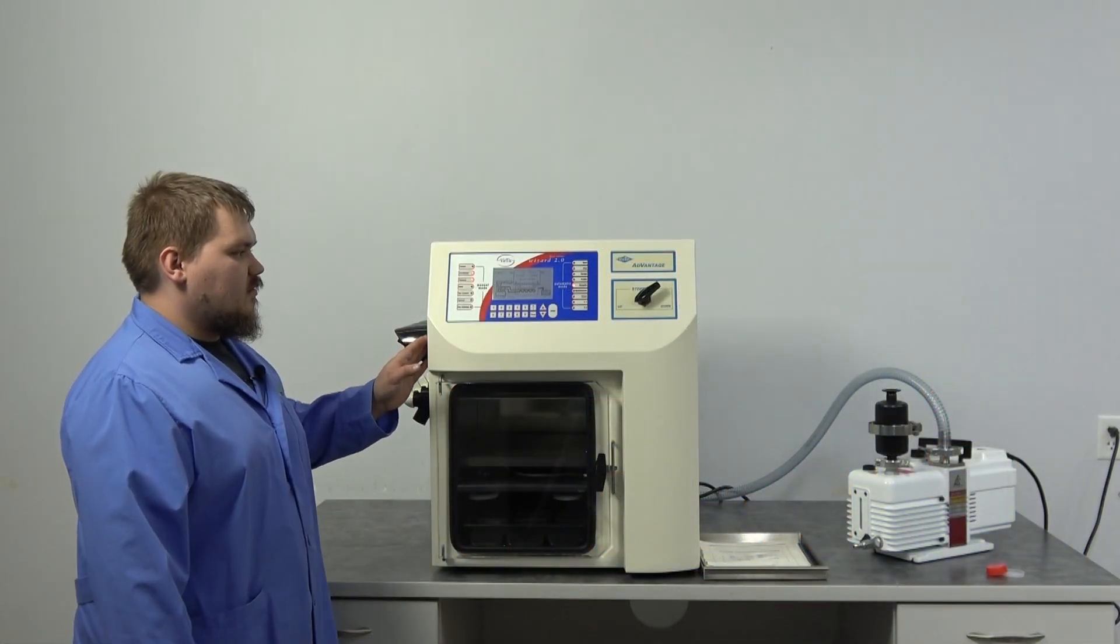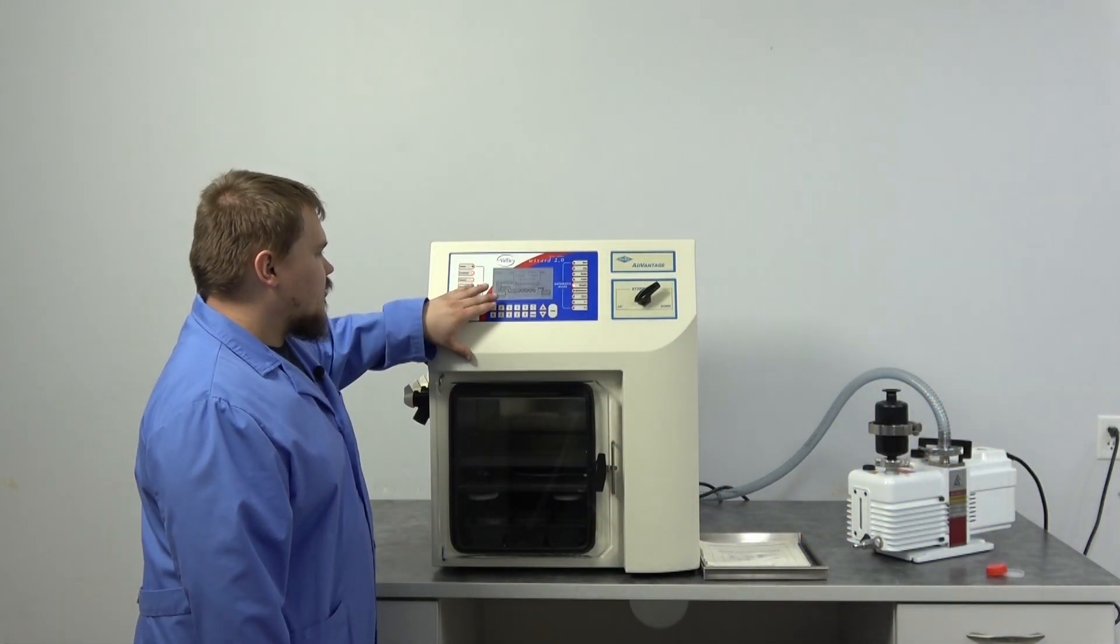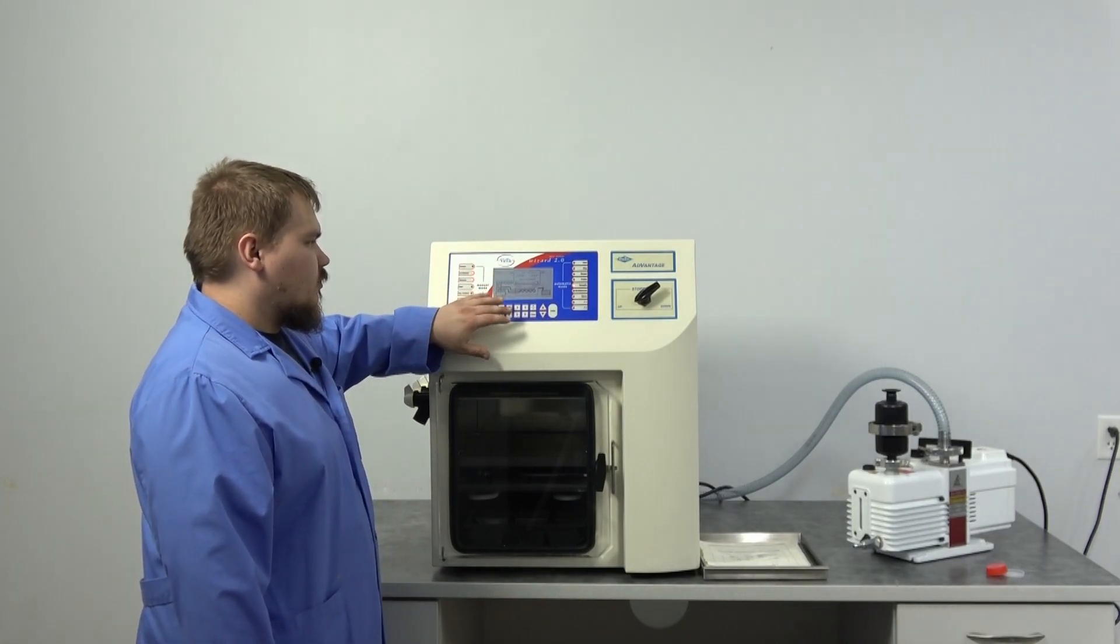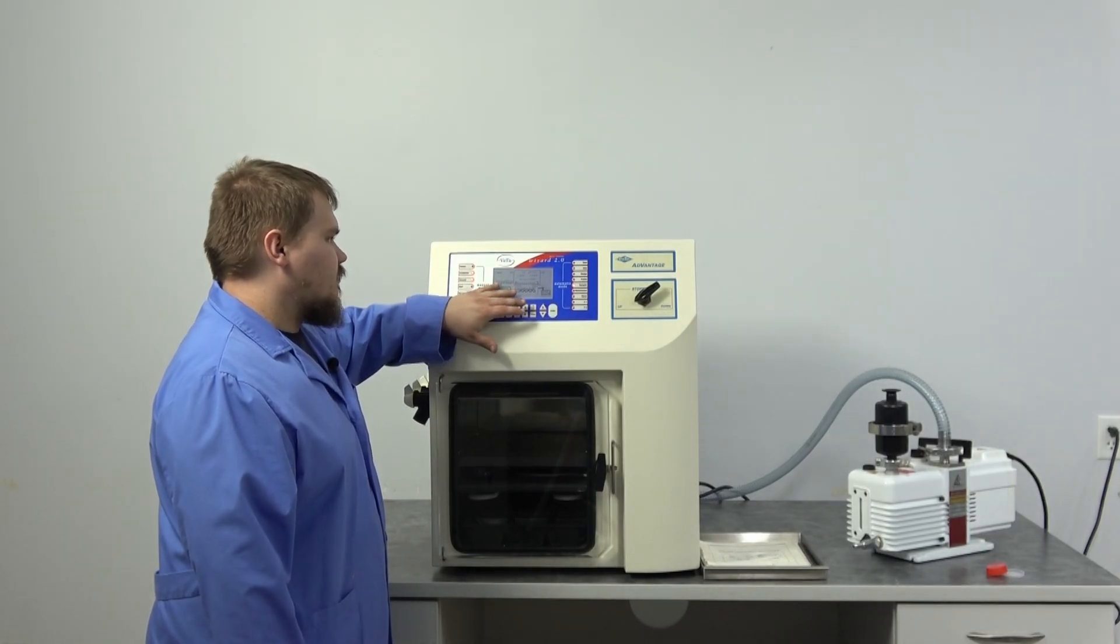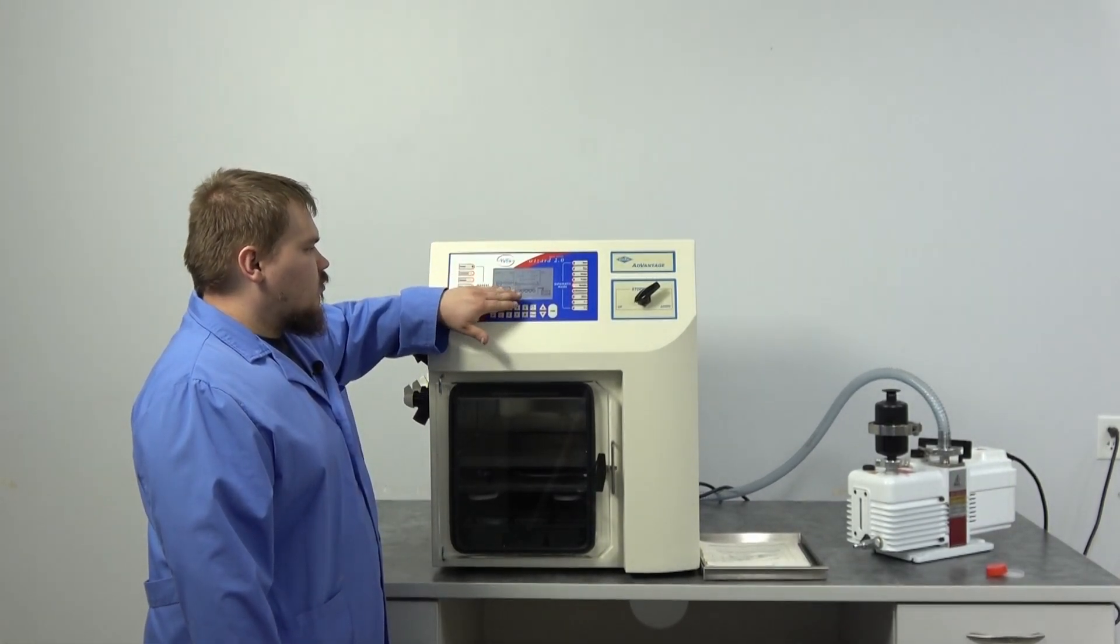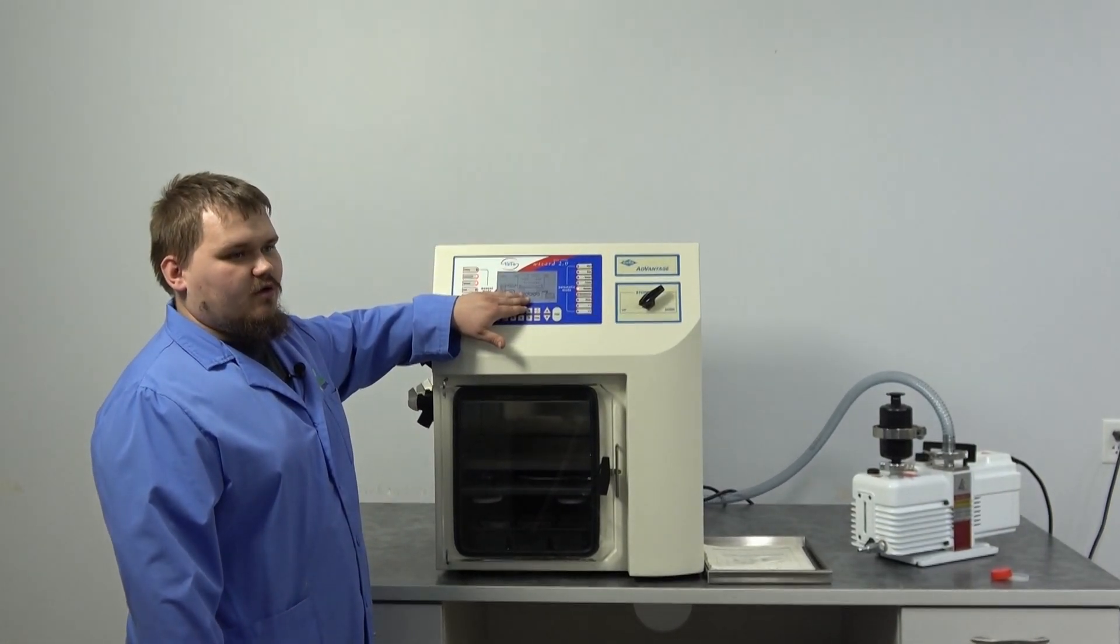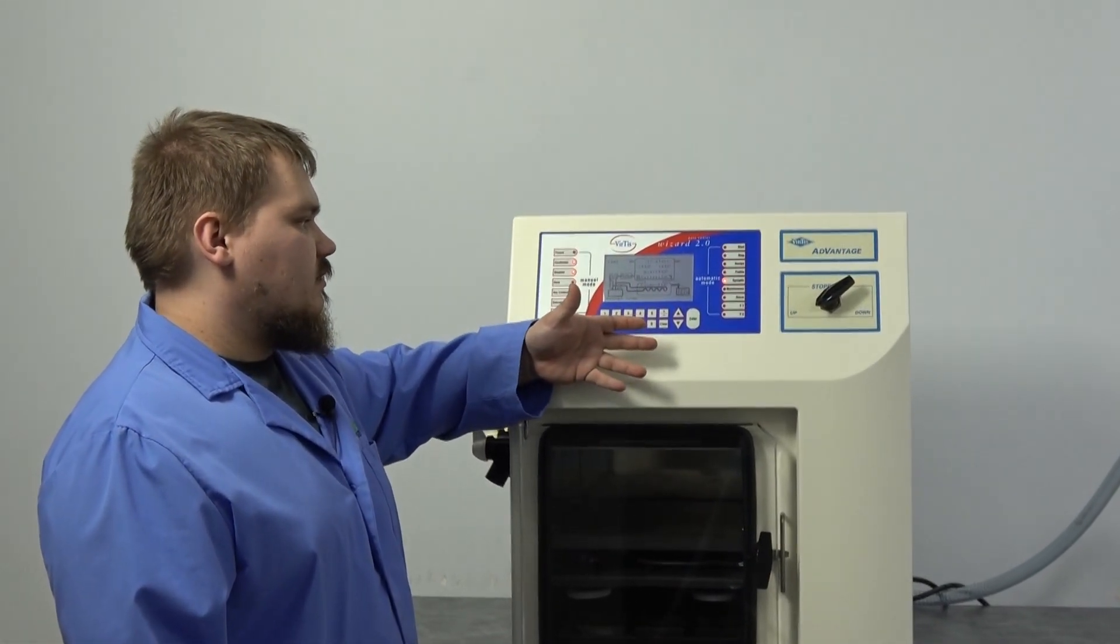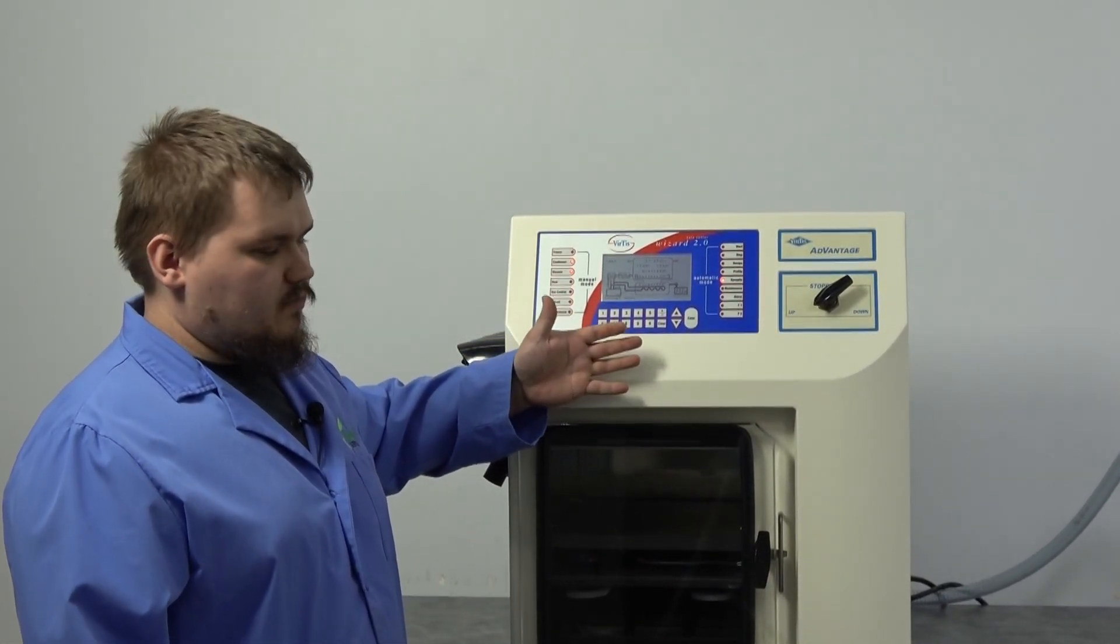All right, now the machine is down to specification for the vacuum. It is right around 17, 17-ish mil torr. It can fluctuate a little bit, especially with lower vacuums. And something else you're going to notice is the temperature also dropped a couple more degrees. Like I said, it's going to drop with vacuum also.